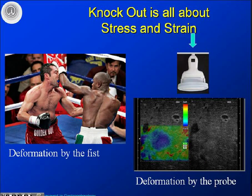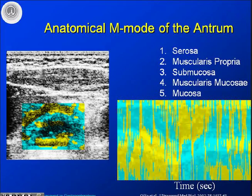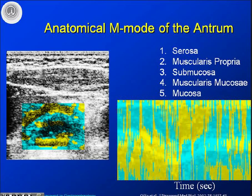Strain and stress is something you might associate with a boxing match — deformation followed by a stressor. We deform the tissue by pressing the probe and image how the tissue reacts using color coding. When looking at contracting tissue we use a Doppler technique to get deformation of the different wall layers in a sagittal section of the stomach. You can have the five different wall layers, position an anatomical M-mode through the wall, and get an M-mode recording of what happens within the GI wall. Green means expansion of tissue and yellow means compression.